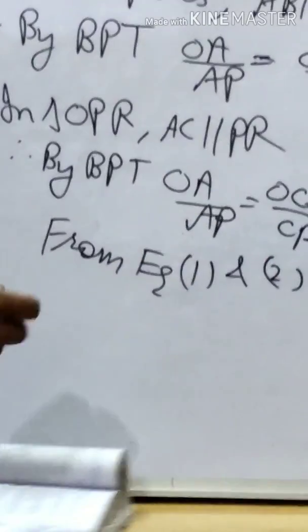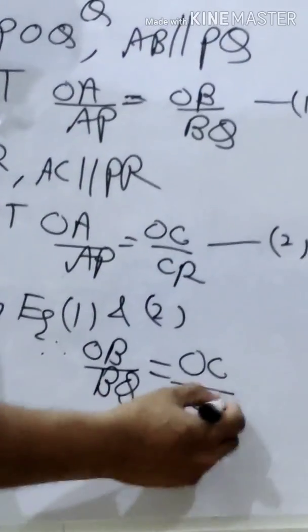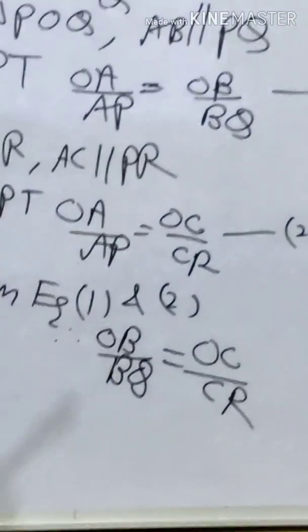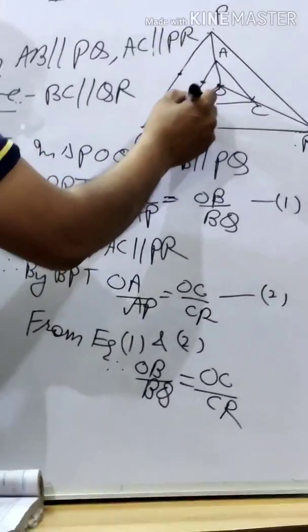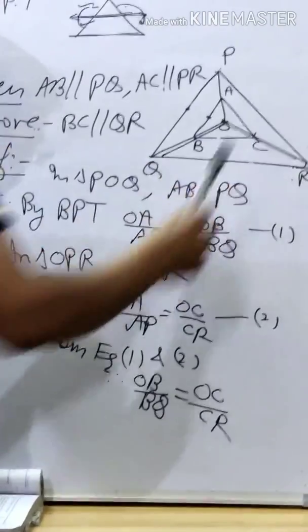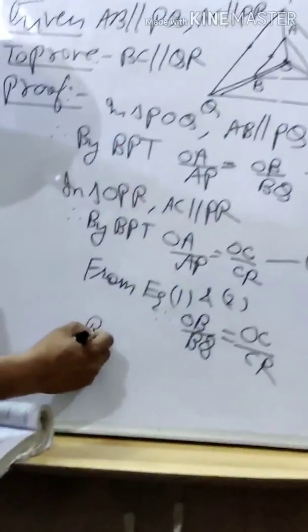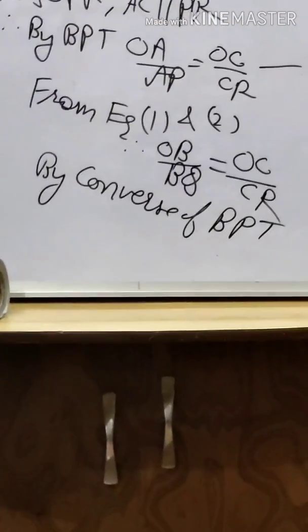From equations 1 and 2, the left-hand sides are equal, so the right-hand sides are also equal: OB upon BQ equals OC upon CR. Now observe these two ratios — OB upon BQ and OC upon CR — in triangle OQR. Since the two ratios are equal, by the converse of BPT, BC is parallel to QR.